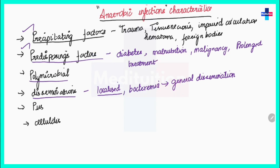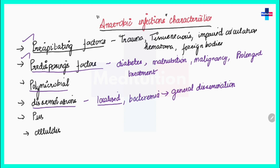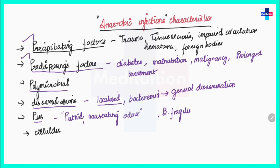Anaerobic infections give clinical features that suggest their presence. One is the characteristic pus — the pus produced in an anaerobic infection is usually putrid, giving a very bad, nauseating odor. There may be exceptions, for example the pus produced by Bacteroides fragilis is actually free of smell.